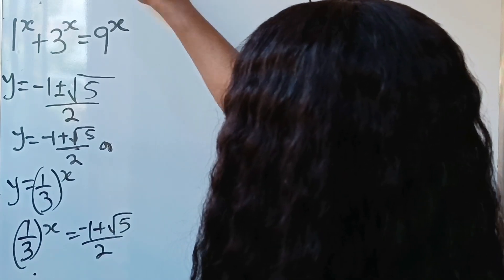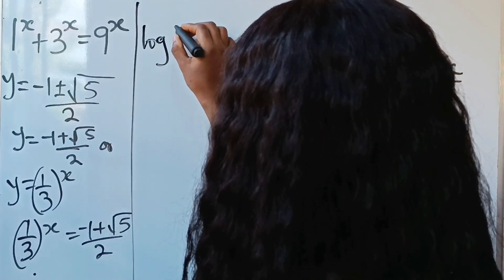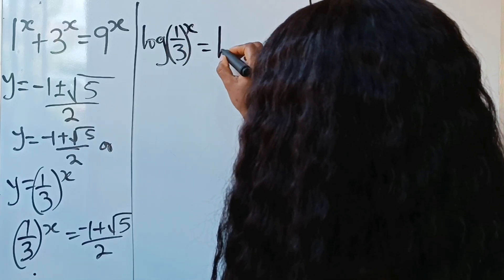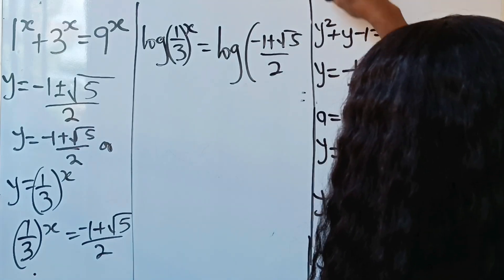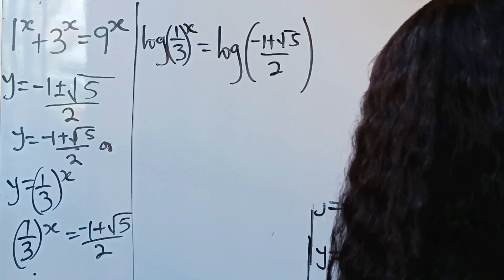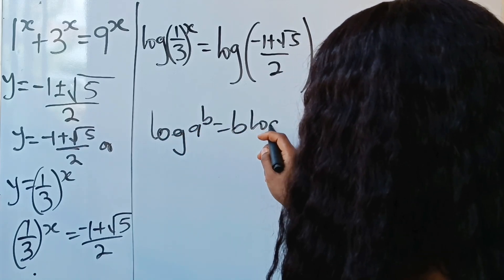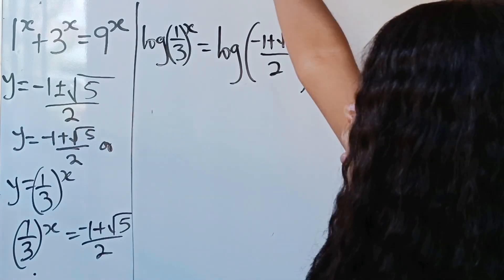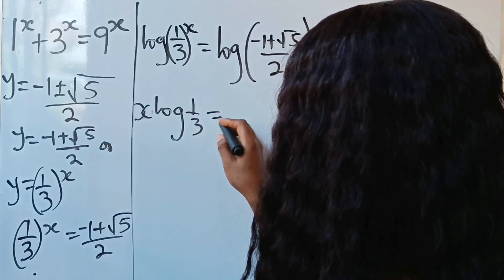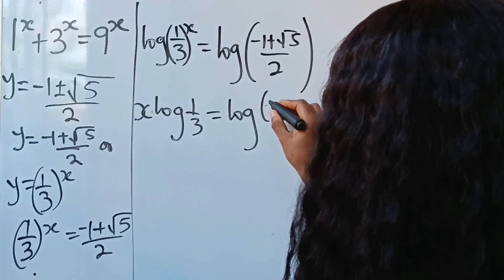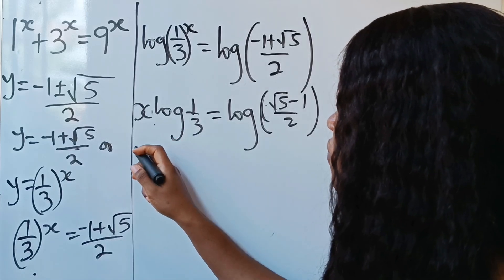At this point we have no other option than to take the logarithm of both sides. So we write log of 1 over 3 to the power of x equals log of root 5 minus 1 divided by 2. Using the rule that log a raised to the power of b equals b times log a, we bring down the power x to get: x times log(1 over 3) equals log of root 5 minus 1 divided by 2.